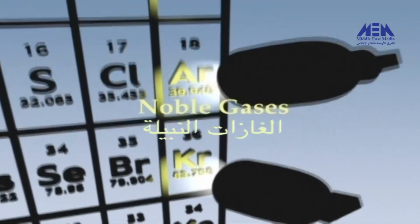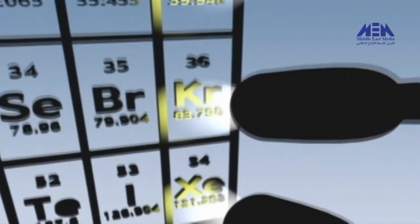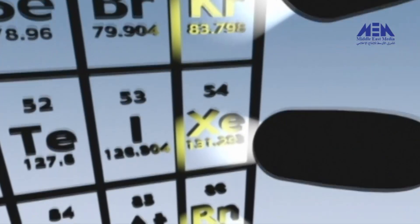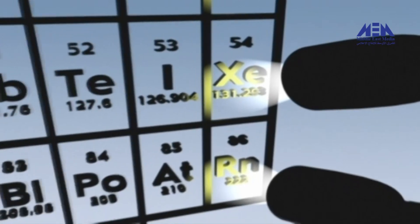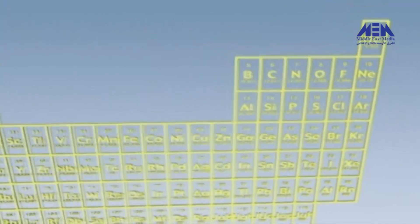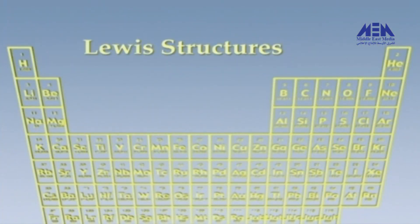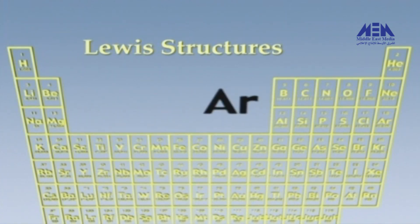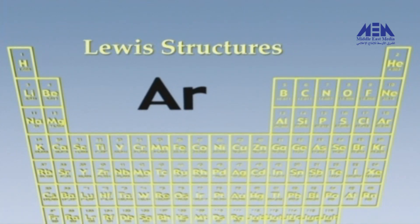It is only the outermost electrons — called the valence electrons — that need to be the focus of our attention. These elements are extremely reluctant to react with any other element. Because only the valence electrons matter, a simplified notation called Lewis structures is used, based on the symbol of the element with the valence electrons represented by quickly drawn dots, where each dot counts for one valence electron.